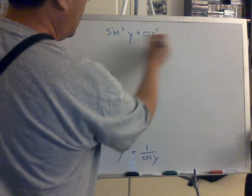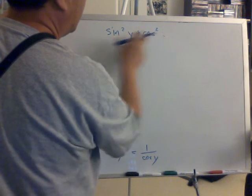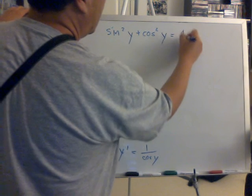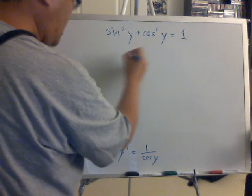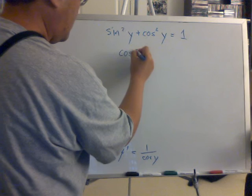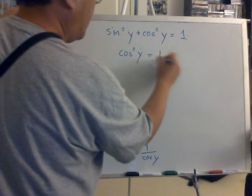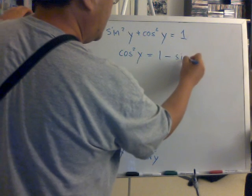Sine squared of y plus cosine squared of y equals 1. And you know that cosine squared of y is equal to 1 minus sine squared of y.